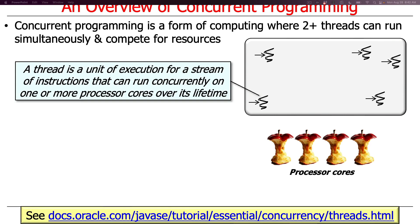What is a thread? A thread is a unit of execution for a stream of instructions that can run concurrently on one or more processor cores over its lifetime. Each thread can be running perhaps a different stream of instructions, or maybe the same stream, and these threads can run concurrently with respect to each other.